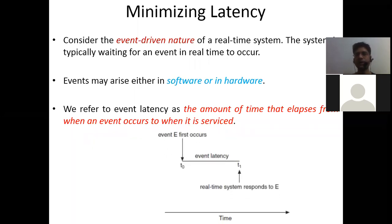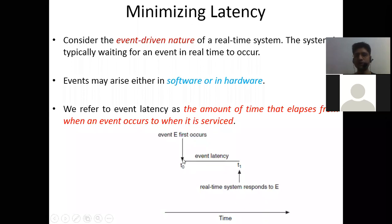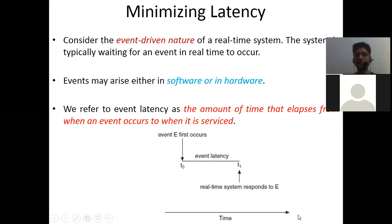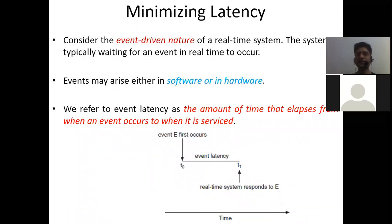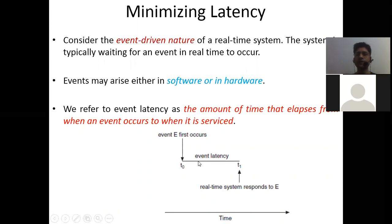Let's look at a diagram. At time t0 the event first occurs — you arrive at 9 a.m. for servicing. The event latency is t1 minus t0, where t1 is when the real-time system first responds — say 9:30 a.m. So t1 minus t0, that is 9:30 a.m. minus 9 a.m., is called event latency. On the x-axis we have time, and this time difference t1 minus t0 is the event latency. We must minimize this latency because in a real-time system things must be done in real time.